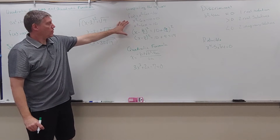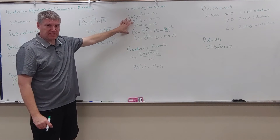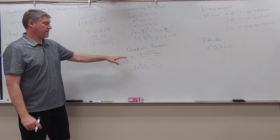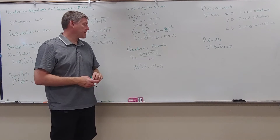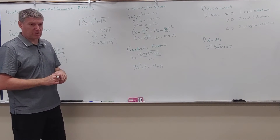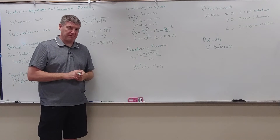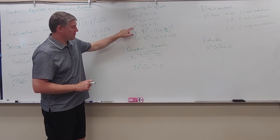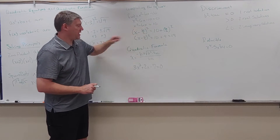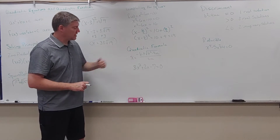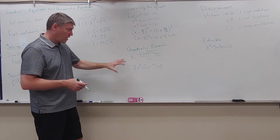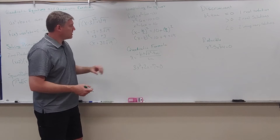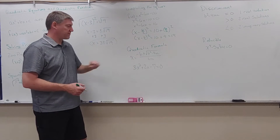That's completing the square. Completing the square leads us to the quadratic formula: x equals negative b plus or minus the square root of b squared minus 4ac, all over 2a. Completing the square always works, and the quadratic formula always works because they go hand in hand — completing the square is used to derive the quadratic formula, as we did in algebra 2.